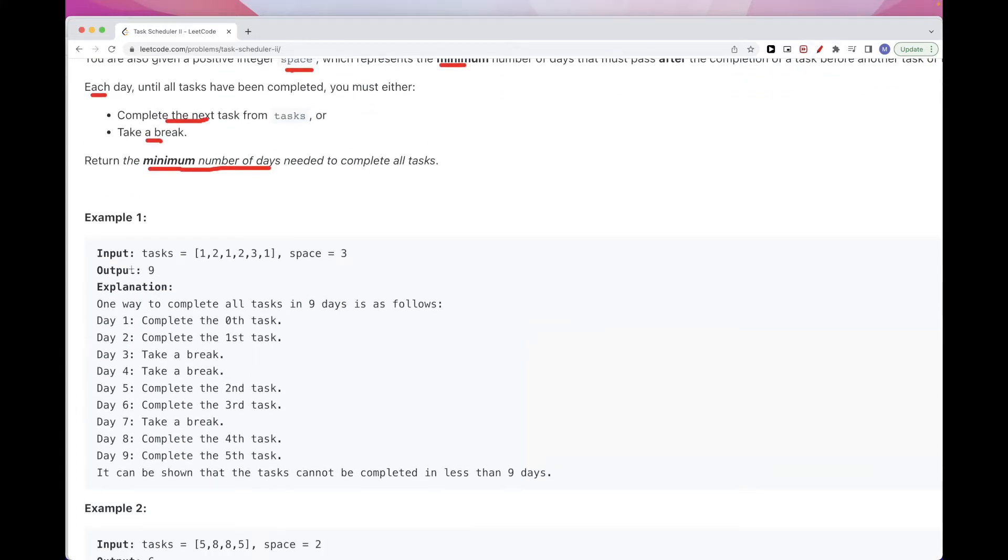So if we take a look at the example we have here, we have space equal to three. So day one, we complete the first task, so the one at position zero here. The second day, we complete this one. Now, the third day, we are looking at one. Can we complete one? Well, we already did one, but the space needs to be equal to three.